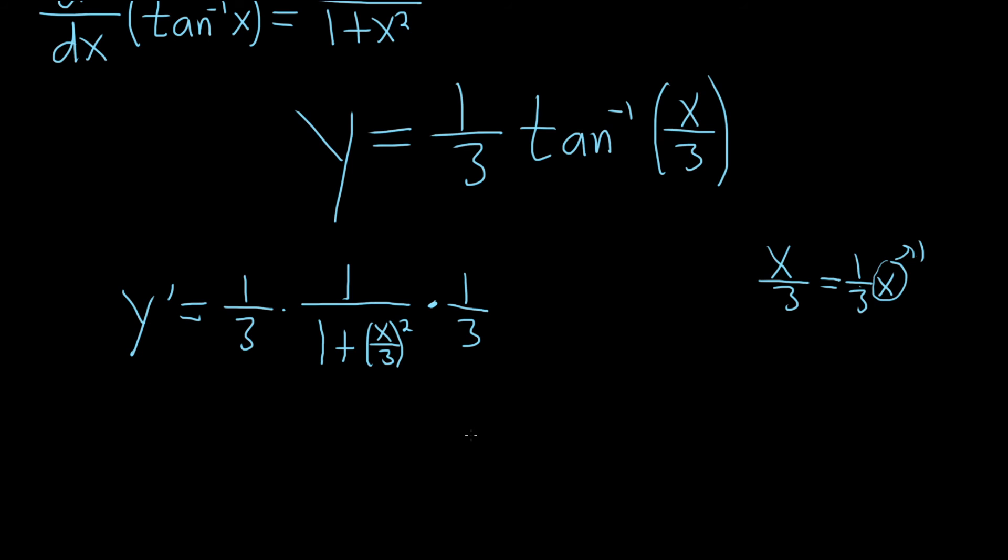All right, let's keep going. So we can multiply these 1/3rds, so we get 1/9. Oh, this is nice. Look, something cool is going to happen. Over 1 plus, and then x over 3 squared is just x squared over 9. And here's the cool thing.